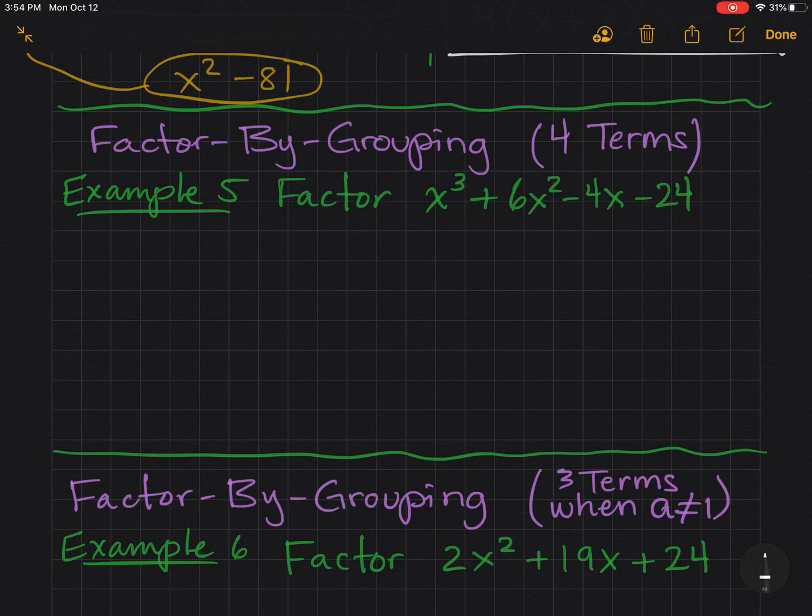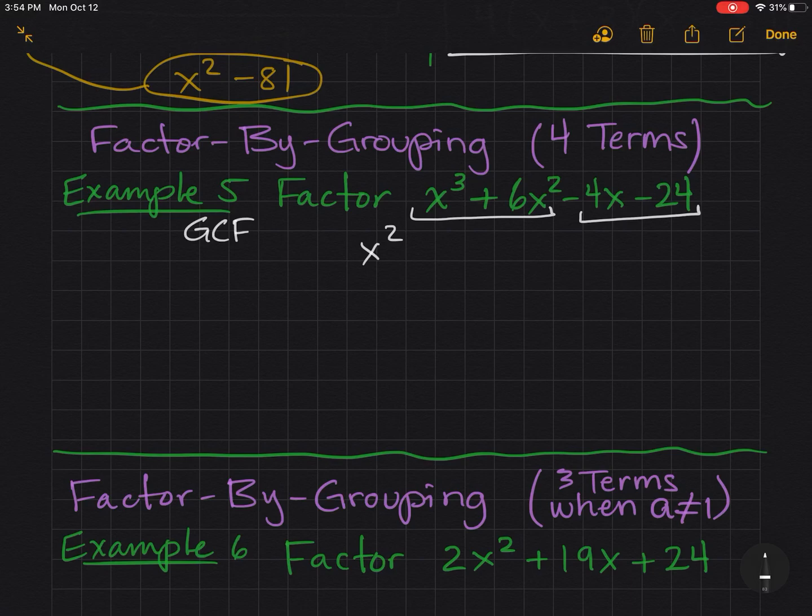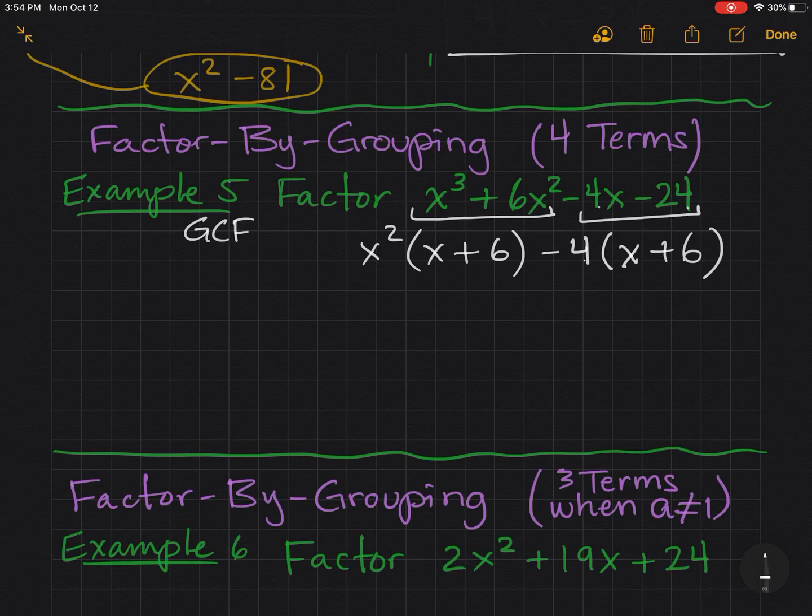Now I'm going to show you how to factor by grouping with four terms. First, you look for the GCF. There's no GCF in all four terms. So now I'm going to break this into two groups. x squared. Now I'm just looking for the GCF of the first two terms. So that's x squared. And I have x plus 6 left. For these two terms, I can factor out a negative 4. And that's x. What can I multiply negative 4 by to get a negative 24? Positive 6.